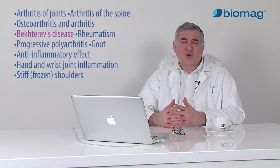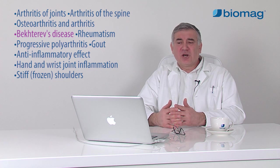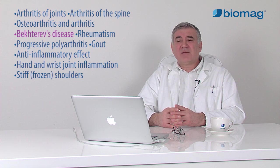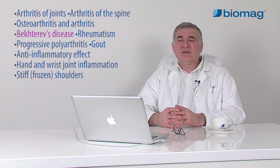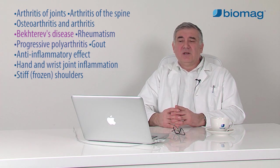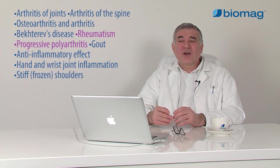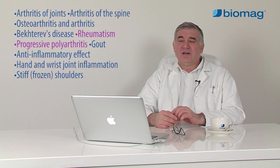Immunity damages a person's own tissues, which is manifested by edema and warming of the joints, sensitivity to touch, and limited function. With time, the inflammation causes anatomical changes, leading to the destruction and deformation of the joints.